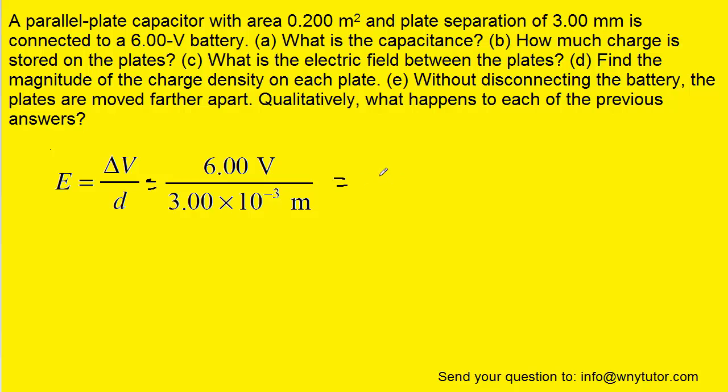And when we simplify this, we get a value of 2 times 10 to the third, and then the unit could be expressed as volts per meter or newtons per coulomb. Those are both acceptable units for the electric field. So that's the correct answer to part C.